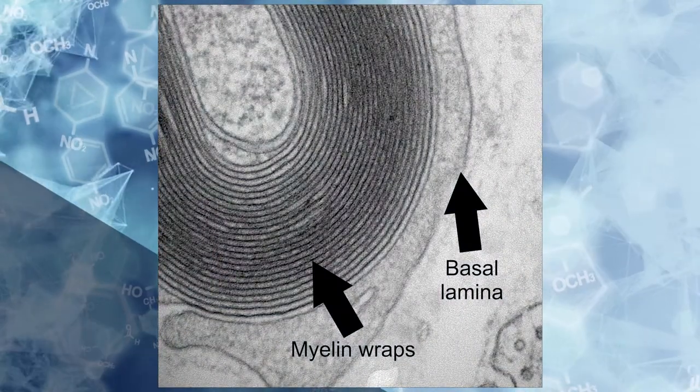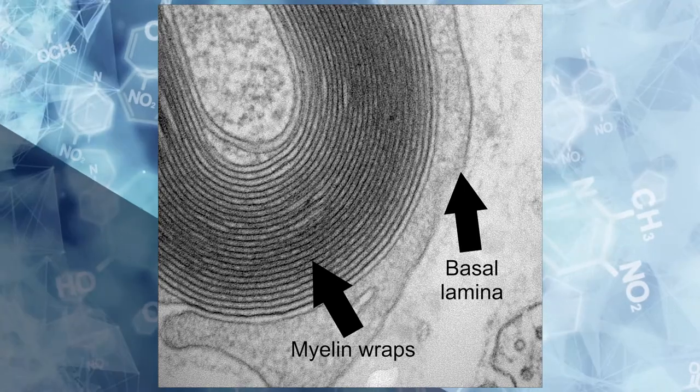We've performed cross-sectional electron microscopy imaging through these myelin segments and you can clearly see the individual myelin wraps and the surrounding basal lamina.